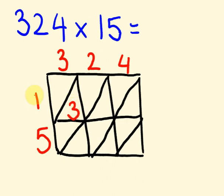So 3 times 1 is 3. 2 times 1 is 2. 1 times 4 is 4. 3 times 5 is 15. 5 times 2 is 10. And 5 times 4 is 20. There you go. Already got the answers.